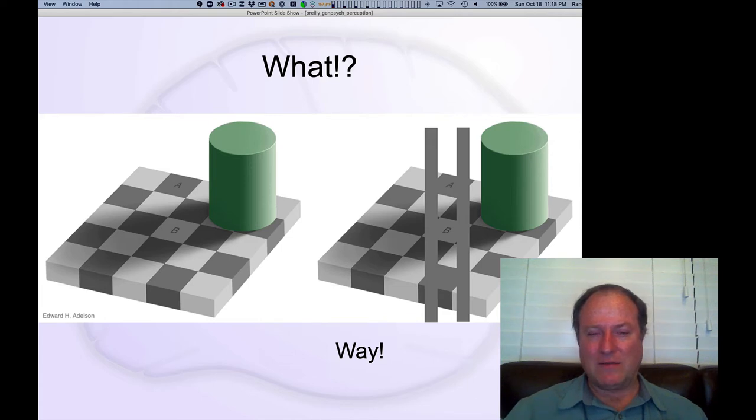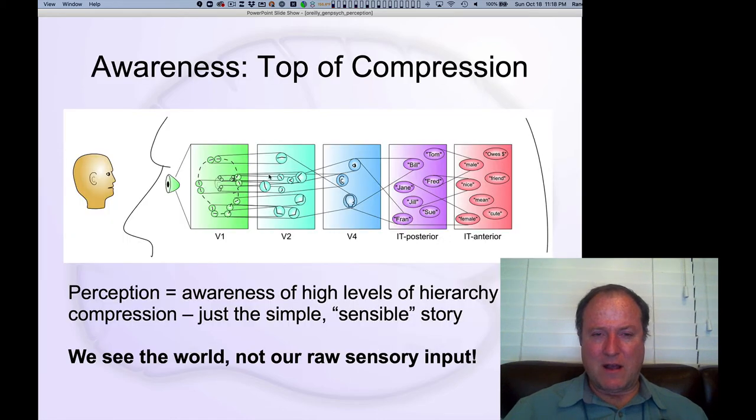So there are some really interesting things going on under the hood to make that compression happen. And that's what we want to understand in this chapter. What is it that drives our ability to make the world simple, to compress all the complexities into this high-level percept?